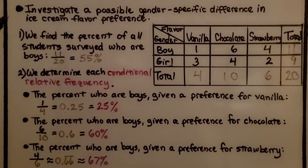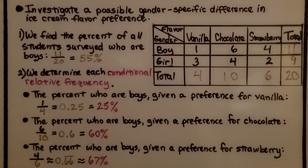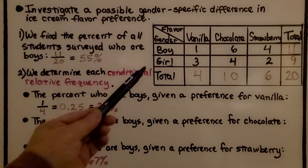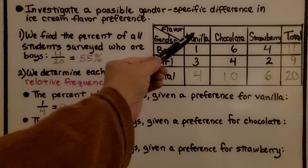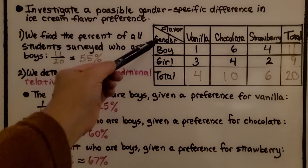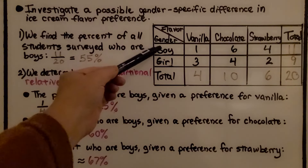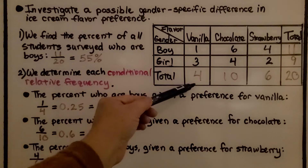Let's look at this table. We have flavors of vanilla, chocolate, and strawberry, and then we have the total. And then we have genders of boy, girl, and the total.